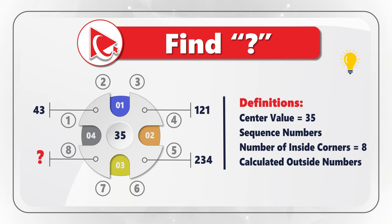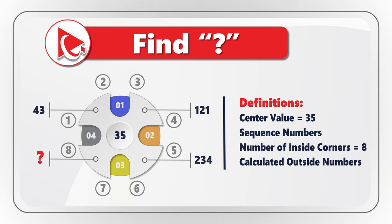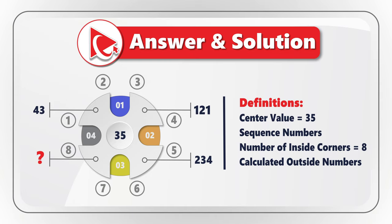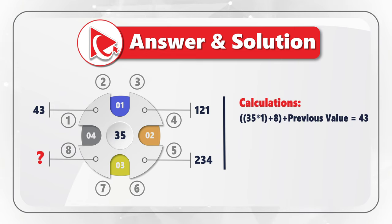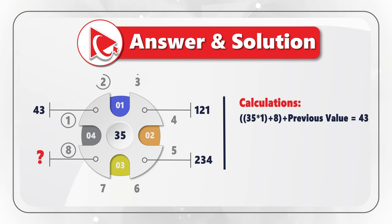These outside numbers are calculated. They start at 43 at 10 o'clock and then grow clockwise. All choices A, B, C, and D are higher than 234. But if you look closely, you can build a formula. The formula is: calculated value equals 35 multiplied by the sequence number, plus the number of corners (which is the fixed constant 8), plus the previous number.